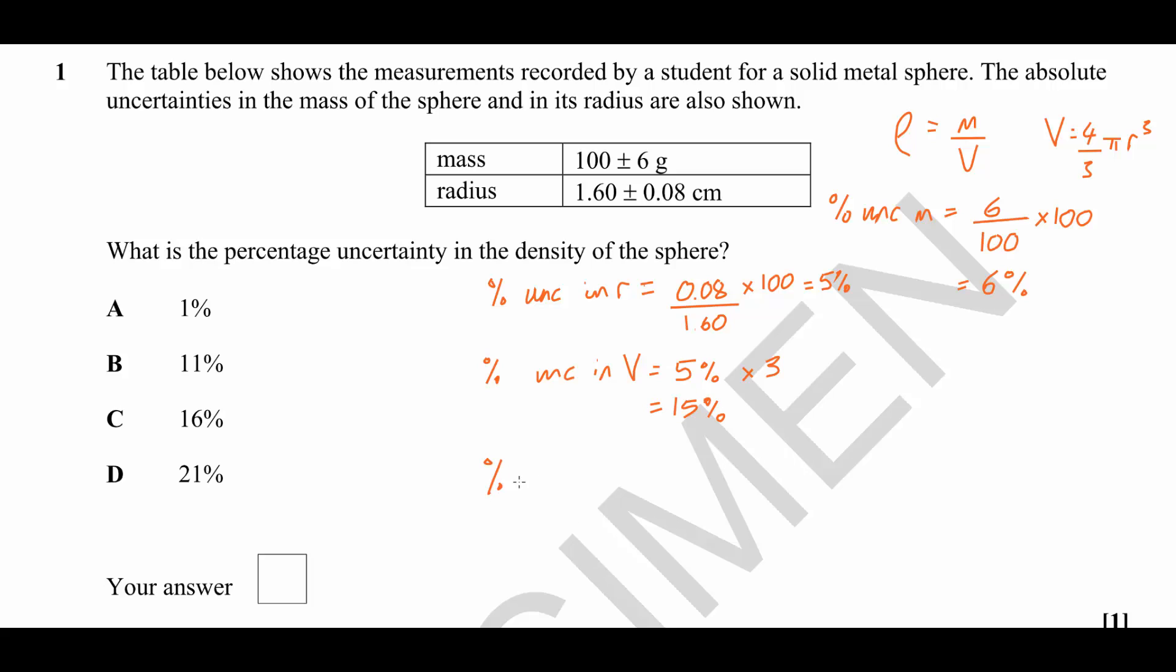So finally, we can work out the percentage uncertainty in the density, and that's going to be equal to the percentage uncertainty in the mass plus the percentage uncertainty in the volume. So that's 6% for the mass plus 15% for the volume, and that gives us 21%. So our correct answer is D.